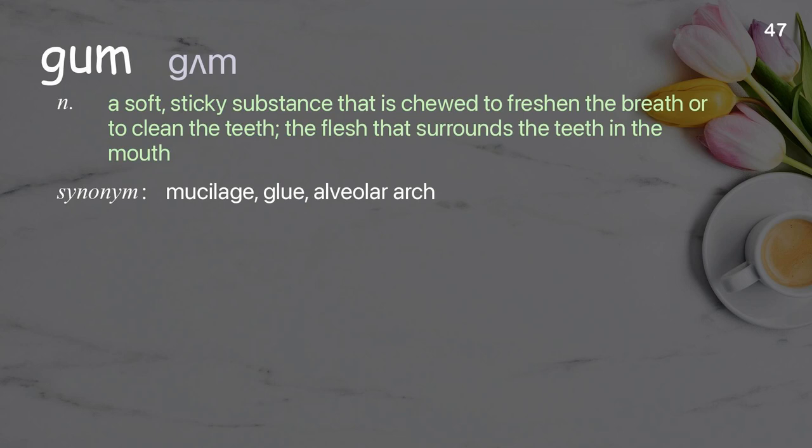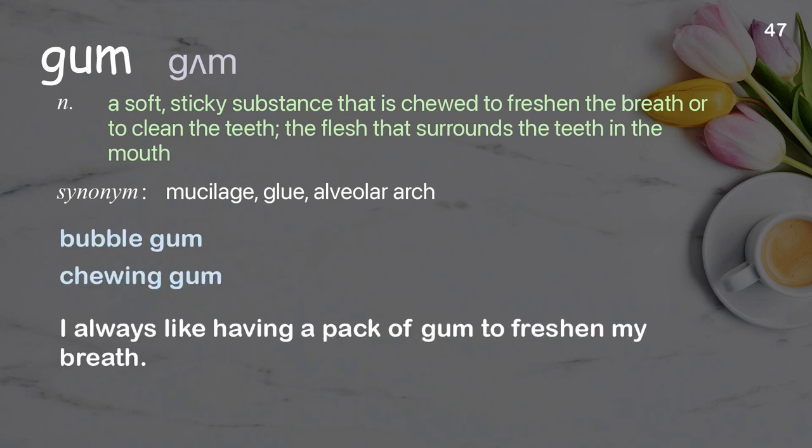Gum: a soft, sticky substance that is chewed to freshen the breath or to clean the teeth; the flesh that surrounds the teeth in the mouth. Examples: bubble gum, chewing gum. I always like having a pack of gum to freshen my breath.